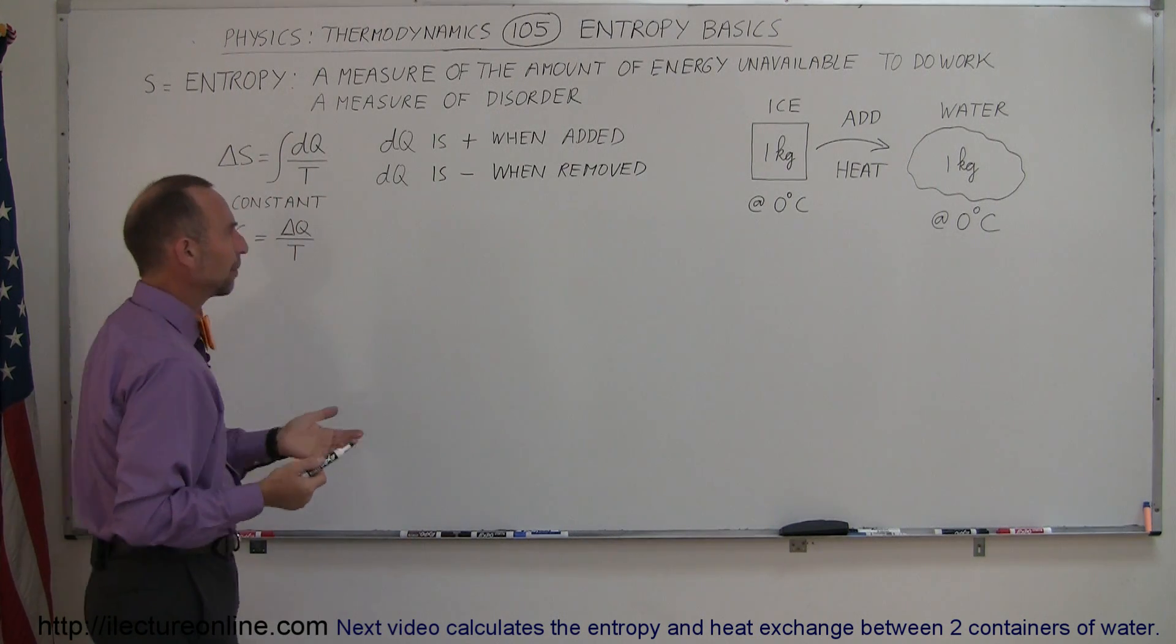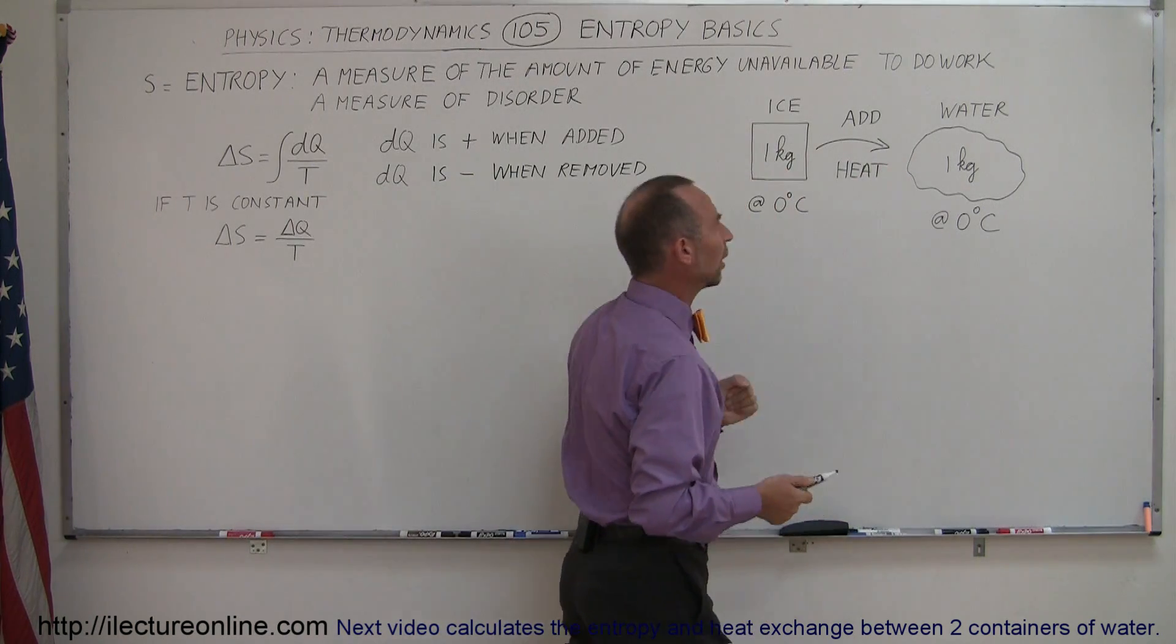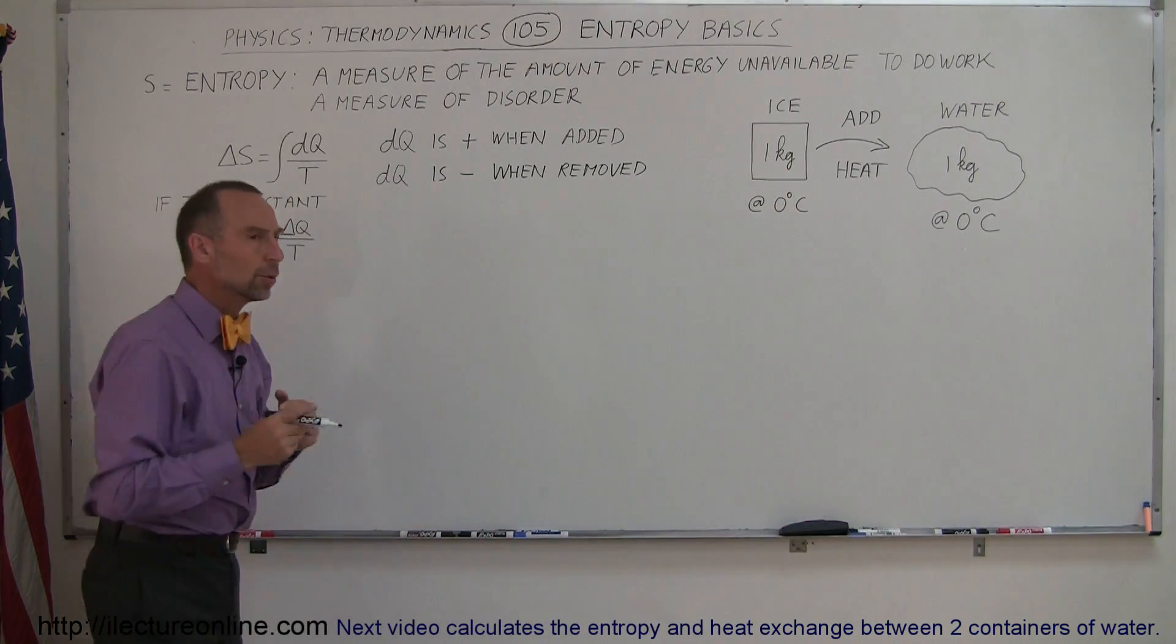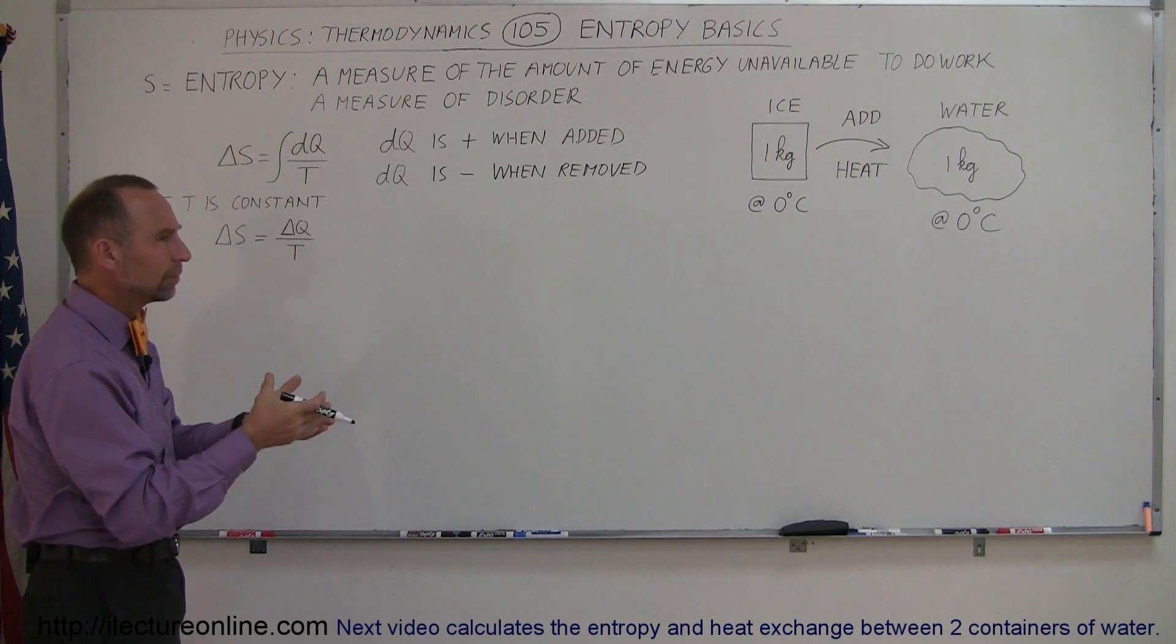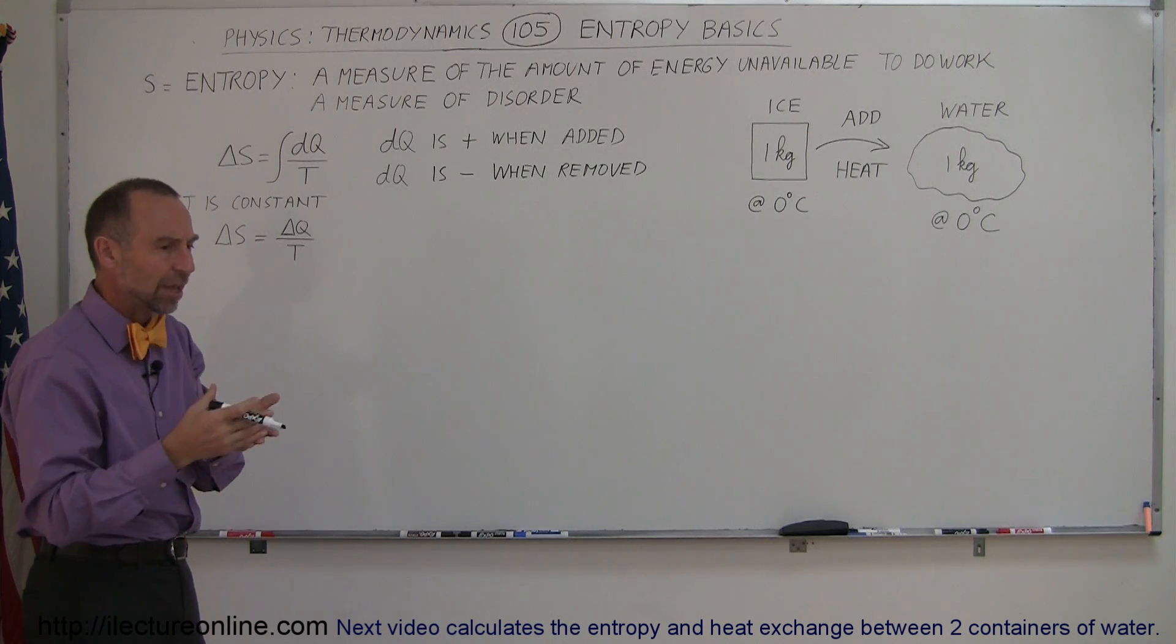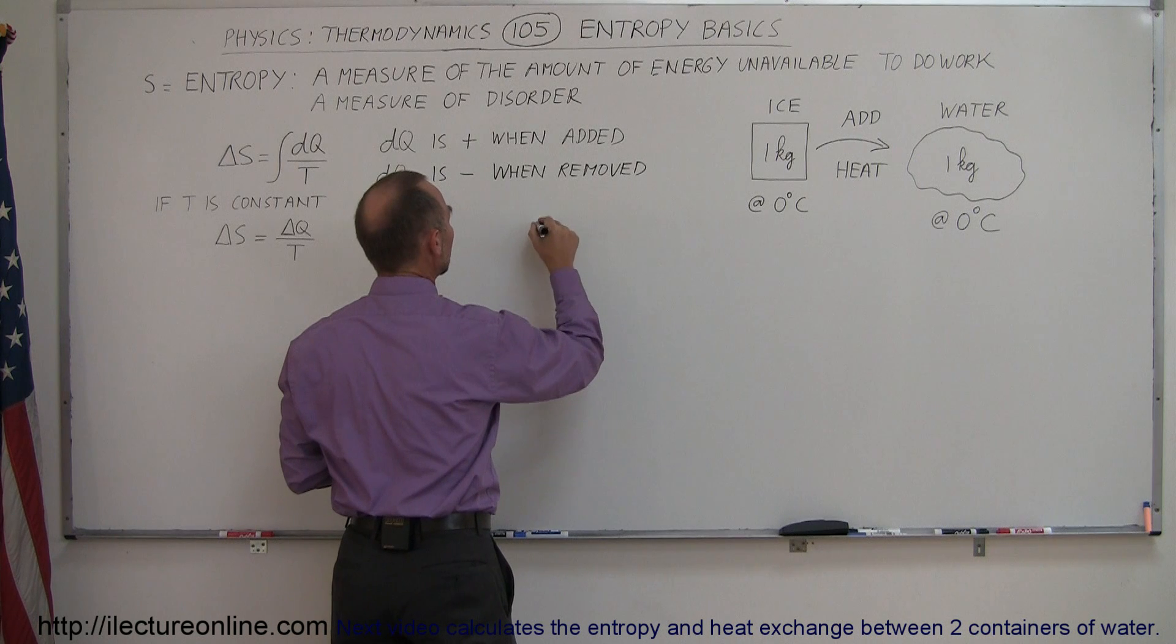Alright, so let's do an example. Let's take one kilogram of ice converting to water. Now when we make ice melt we have to add heat to it and how much heat do we add?